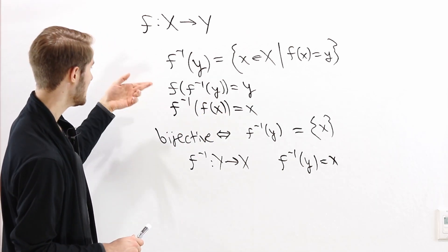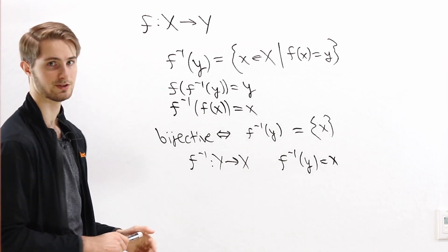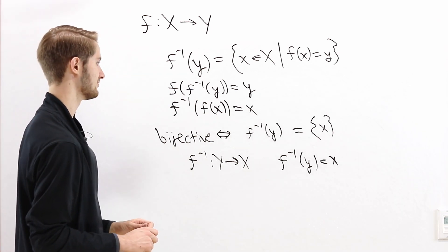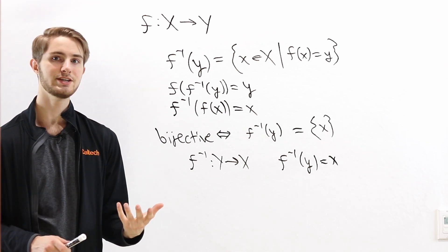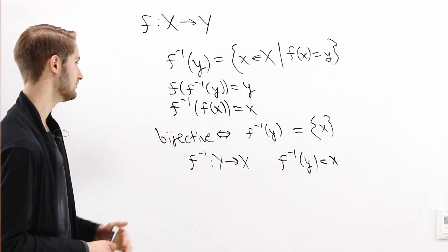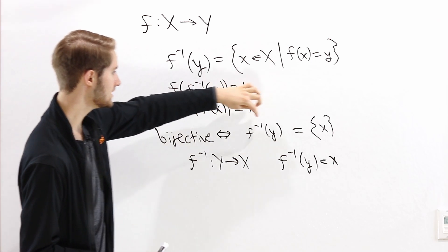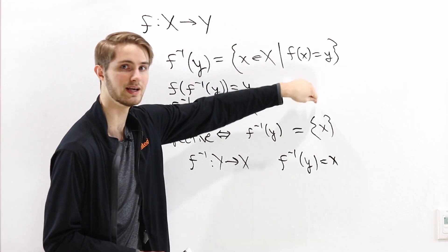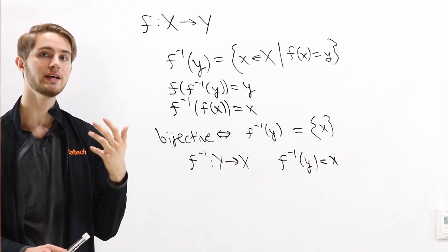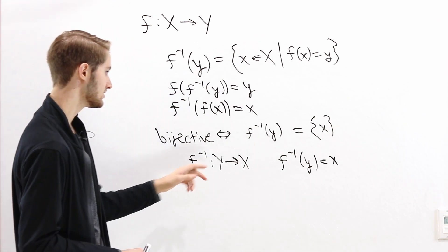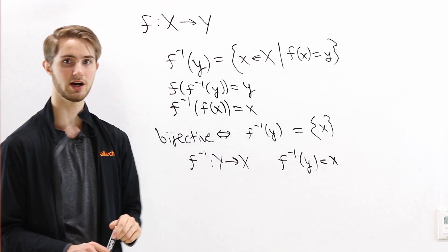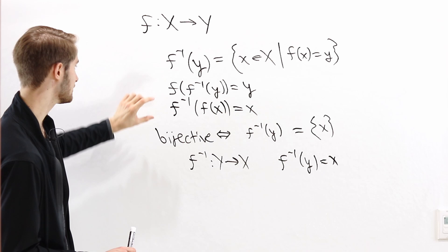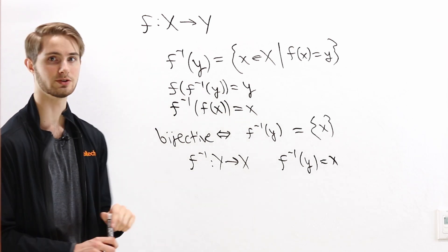Now we have that f inverse is both a right inverse and a left inverse, so it's a two-sided inverse to our function f. That is why bijective functions have a two-sided inverse: if a function is bijective, then for each element of the codomain the preimage has exactly one element. We can define an inverse function by taking the one element of the preimage for each output, and by the definition of preimage this gives us both a left and a right inverse.